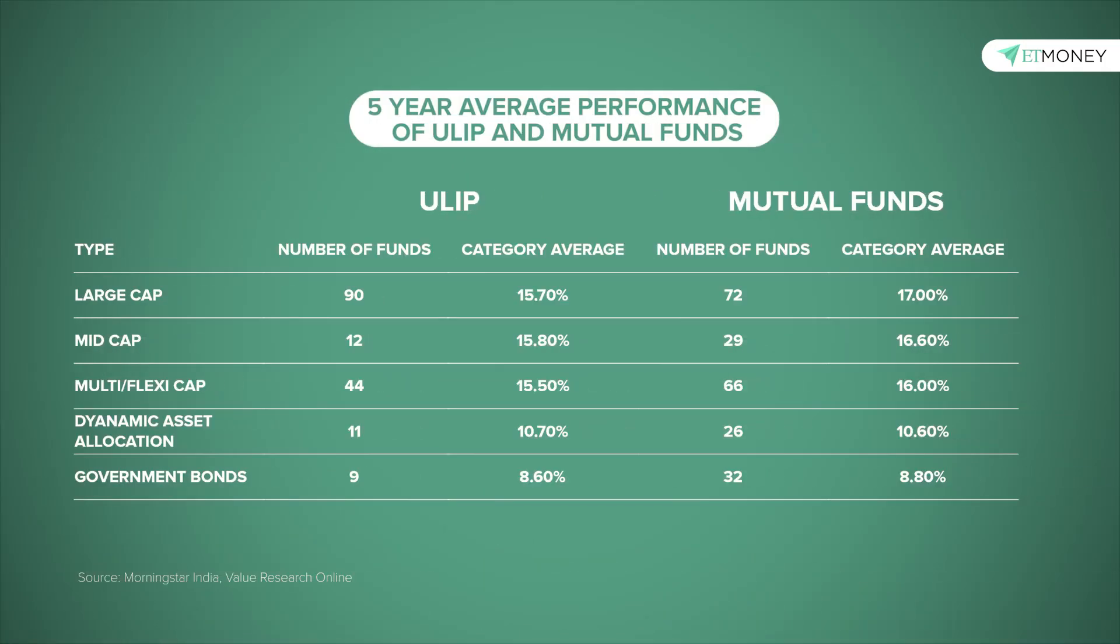Here, let's look at the five-year average performance of ULIPs and mutual funds across some popular fund categories. The data here shows that the category performance of ULIPs were lower than the category returns of mutual funds but were not alarmingly lower. It was somewhat in the acceptable range.